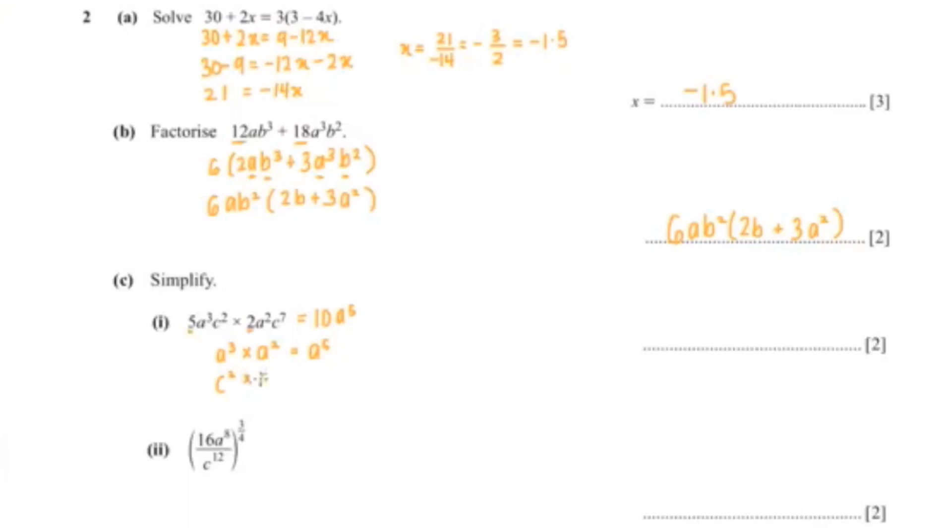C squared multiplied with c to the power 7 is c to the power 9. Again, you add up 2 and 7. So your final answer is 10a to the power 5, c to the power 9.